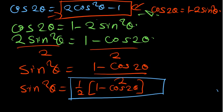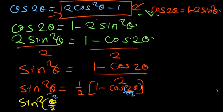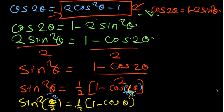We can also come up with a half-angle identity by dividing the angle by 2 everywhere. So sin squared of (theta over 2) equals one-half times (1 minus cos theta). This is another identity you have to know.